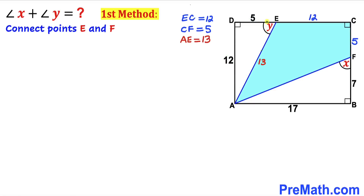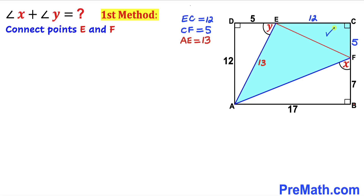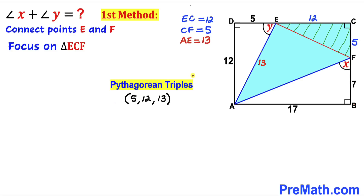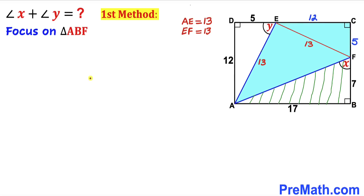Now let's connect points E and F. As a result we get right triangle ECF. Recalling Pythagorean triples — since the side lengths of triangle ECF are 5 and 12, the unknown side EF is 13 units.